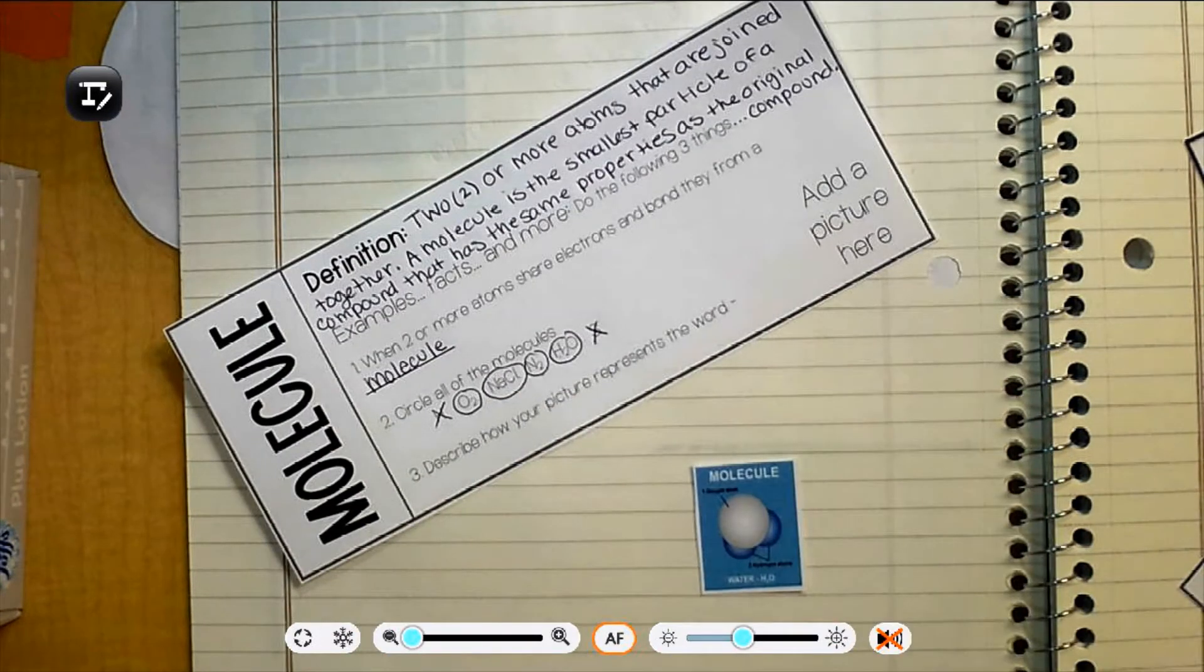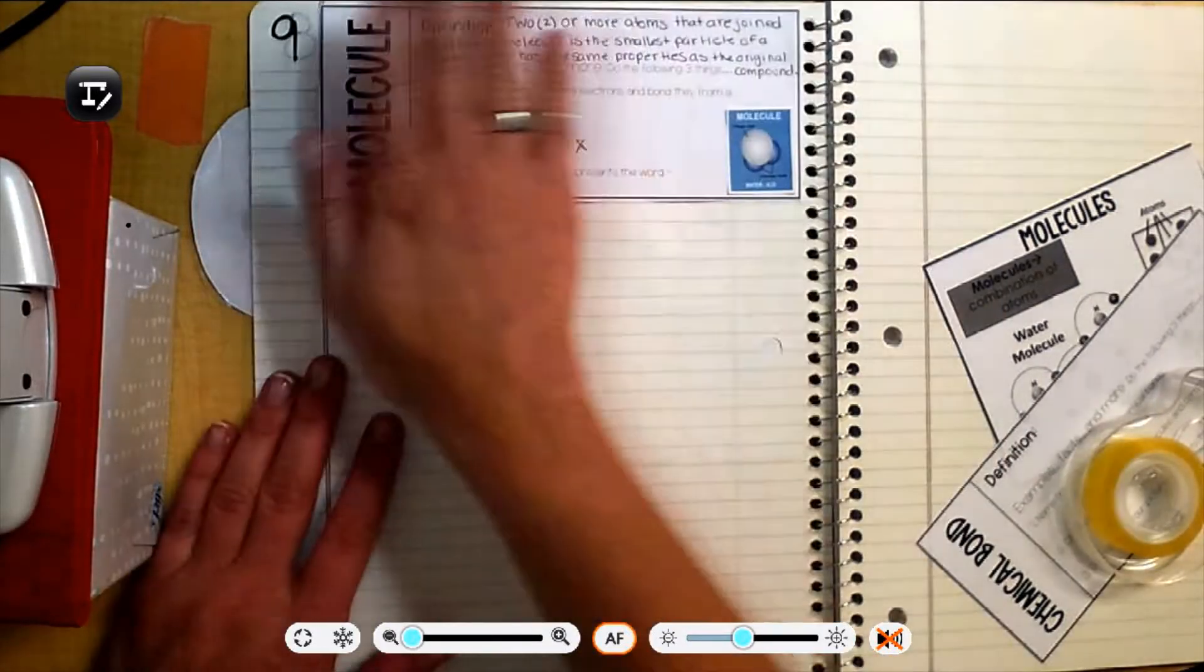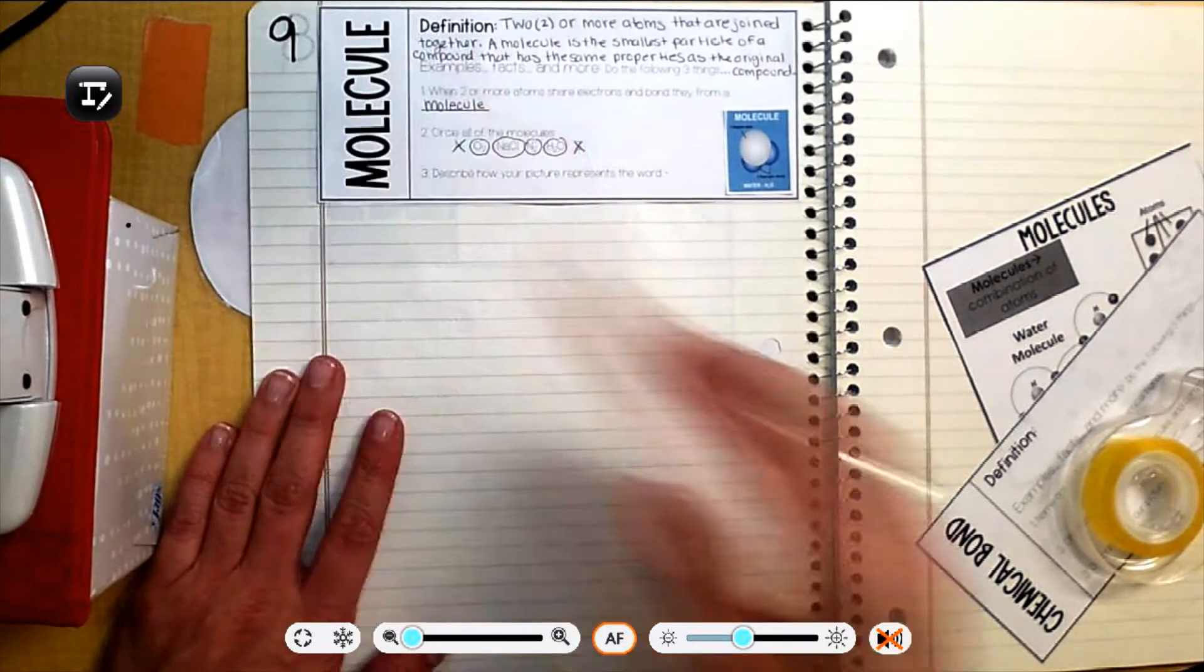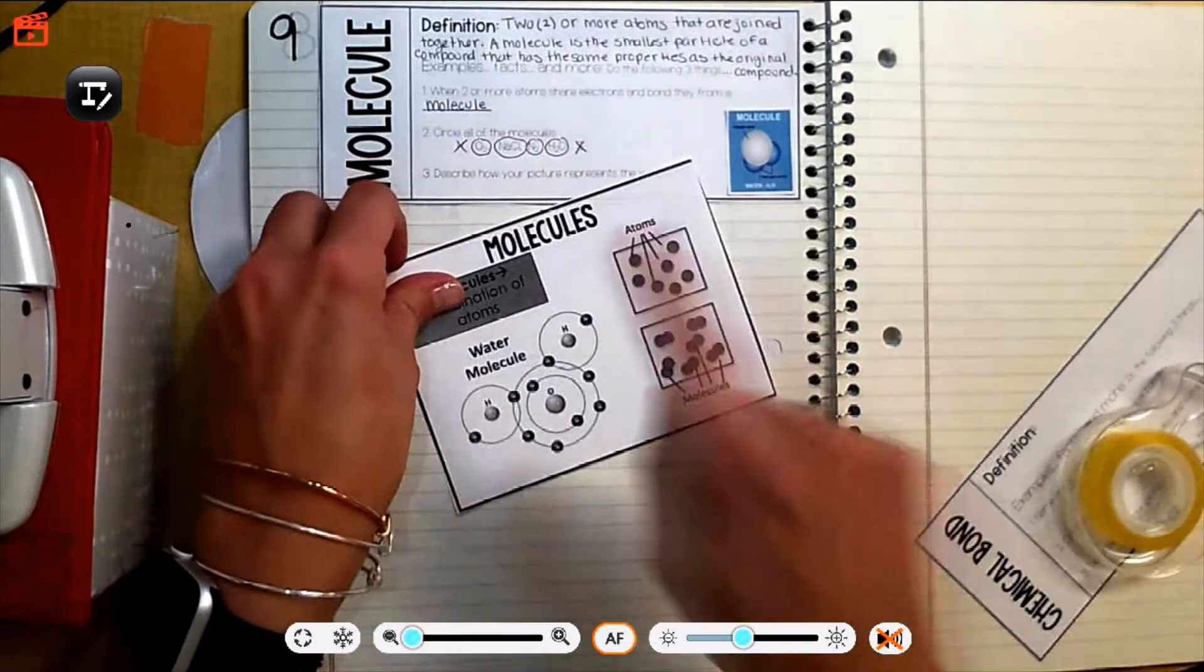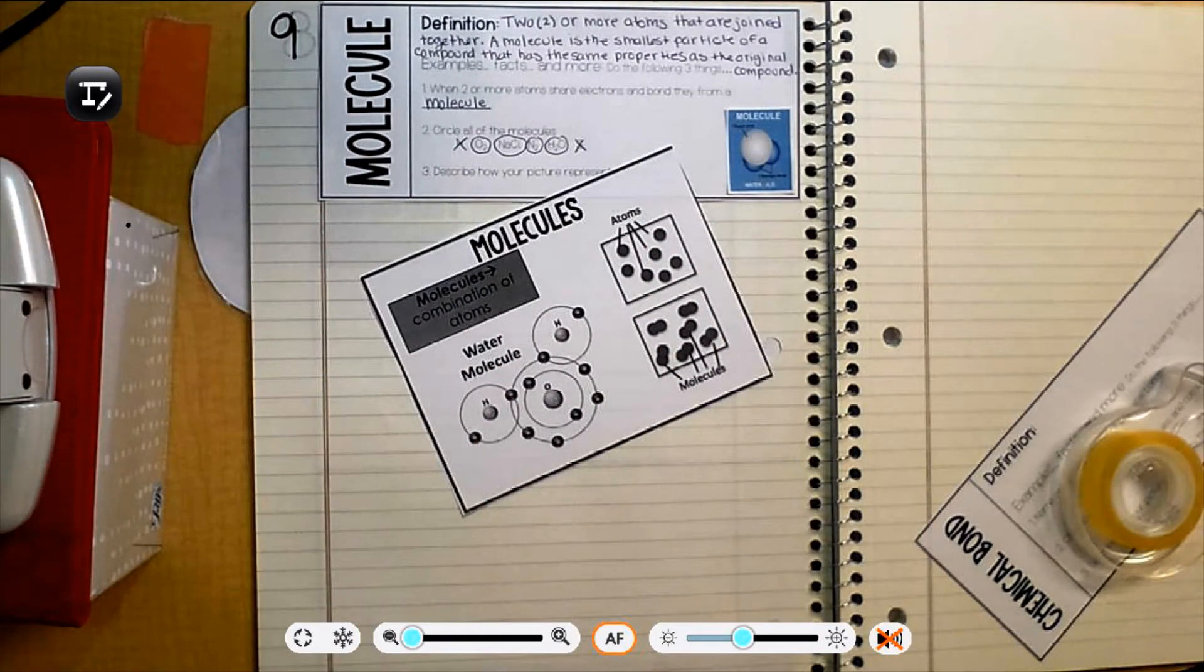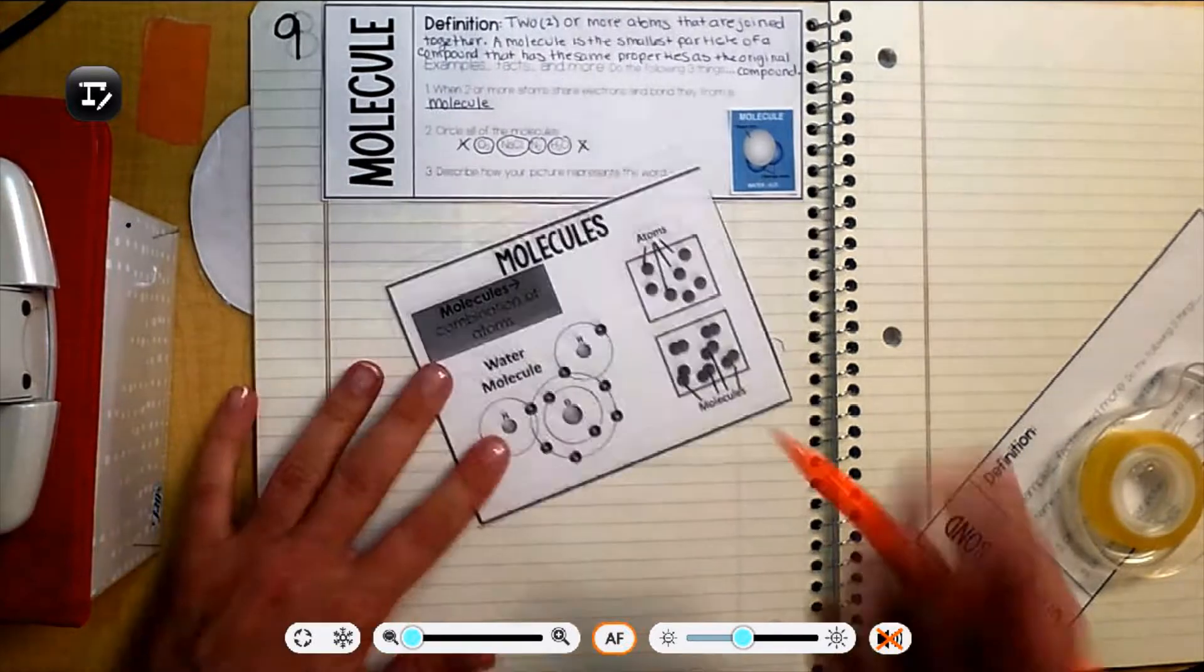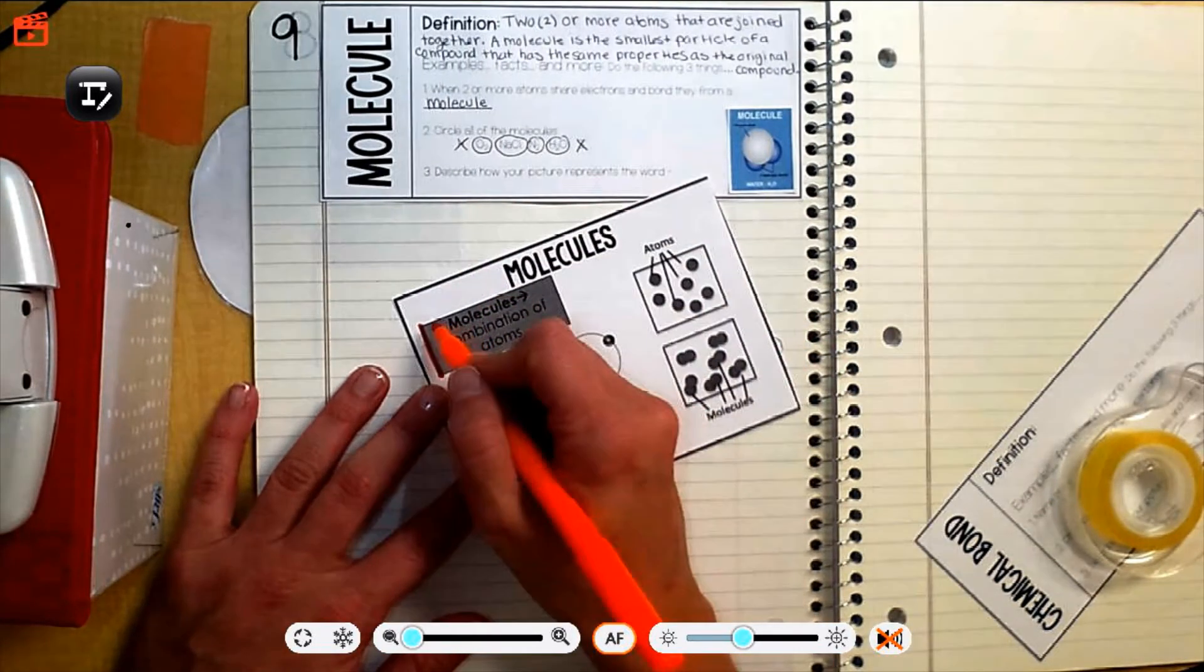Okay, so you're going to need this picture. Get that glued on. So we're still working on page nine. Make sure you get that guy glued in right there. And you're going to need your highlighter for this one. Molecules. Oh, where are my highlighters? Want to throw them away? Hope not. Okay. We'll use this marker. So molecules.